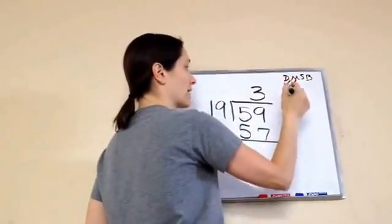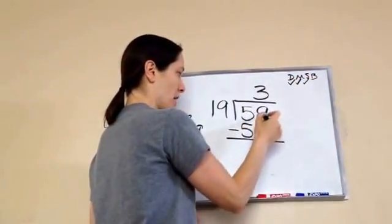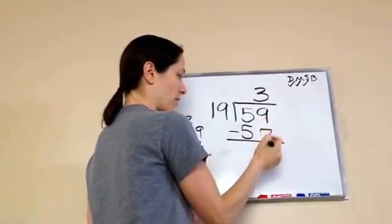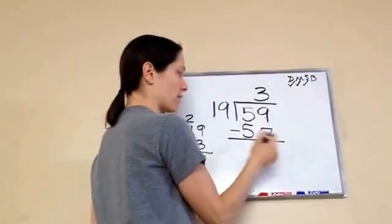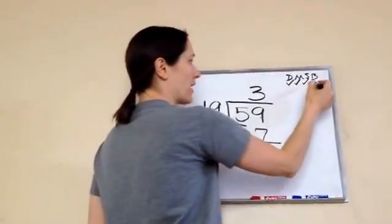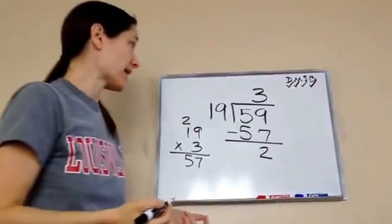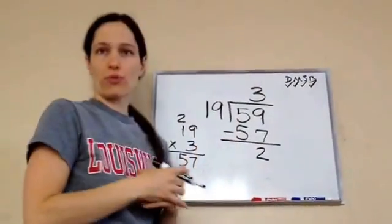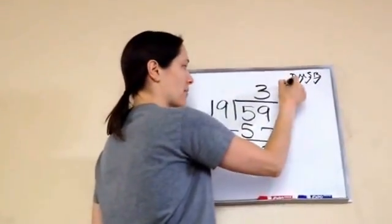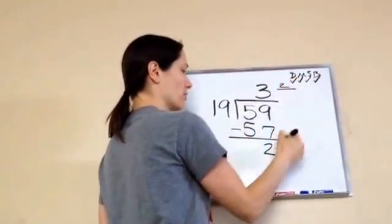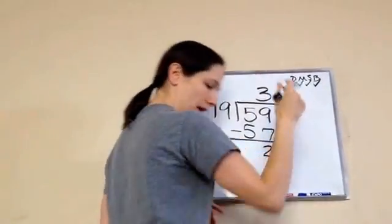59 take away 57 — 9 take away 7 gives us 2, and that's a 0. Bring down — there's nothing else to bring down. So it would be 3 remainder 2, or we could write it as 3 and 2 over 19.